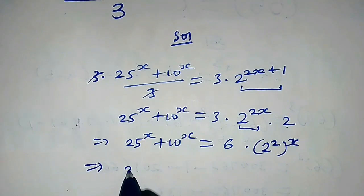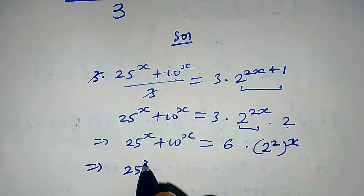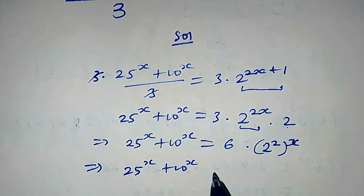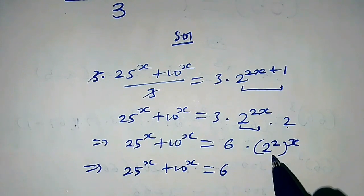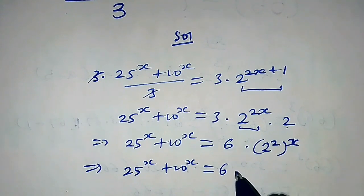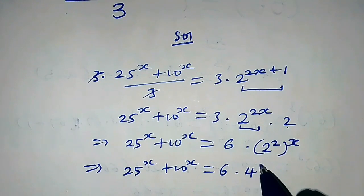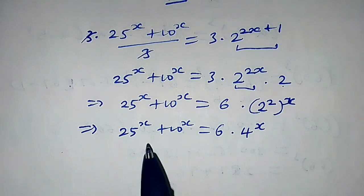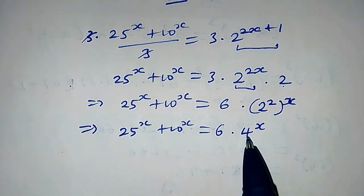This implies 25 raised to the power x plus 10 raised to the power x is equal to 6 times — 2 squared is 4 — so we have 6 times 4 raised to the power x. Now let's divide both sides of this equation by 4 raised to the power x.